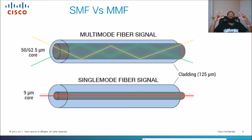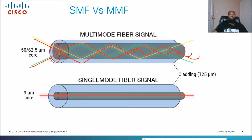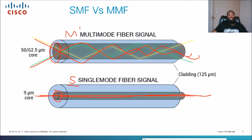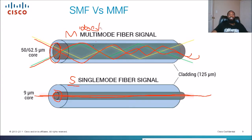Here's just the comparison between the two. Multi-mode bounces up and down and does not travel very far. The core is really big compared to single mode fiber, which is nine microns. Single mode goes straight — S for straight — and travels much further. Multi-mode: M shape bouncing pattern, short distances like a midget. Single mode has a smaller core at nine microns; multi-mode has a bigger core at either 50 or 62.5 microns.